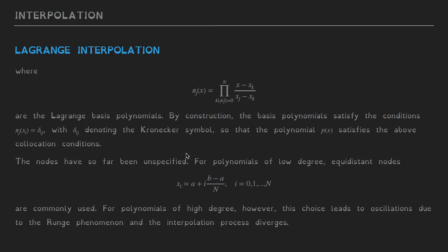So far we have not specified what the nodes are. For polynomials of low degree one often uses equidistant nodes — for example, nodes xi given by a uniform spacing expression. Here we have n distinct nodes that are equidistant in the interval from a to b. This choice is only recommended for polynomials of low degree. If you try to use this for polynomials of high degree or a large number of points, you may run into trouble — in particular, you may run into the Runge phenomenon, which we will see shortly.